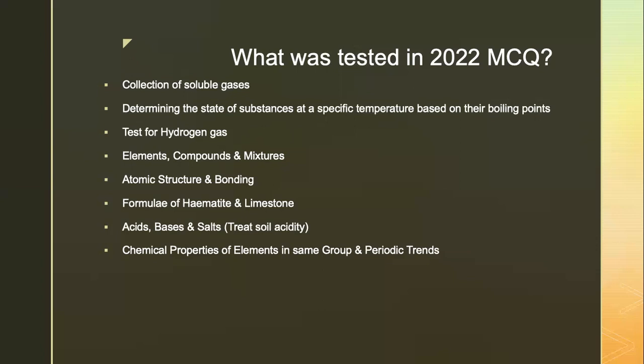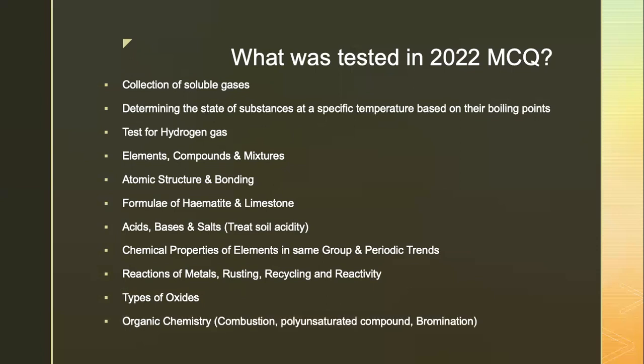The decrease in melting point down Group 1 elements. Reactions of metals, rusting, recycling and reactivity were all tested. Metals was heavily tested in last year's paper. The types of oxides as predicted. Organic chemistry including combustion equations, unsaturated compounds and bromination. Lastly, sulfur dioxide under the topic of air.